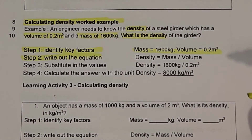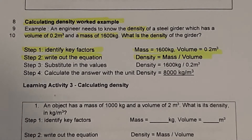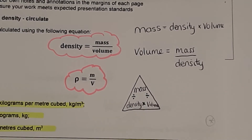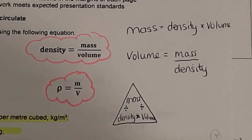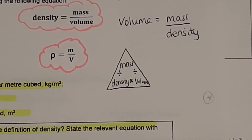Step one: identify your key factors — by writing them out or highlighting them. Step two: write out the equation in the form you're going to use it. It's not just enough to write density equals mass divided by volume; you need to write it in the form you'll use. If asked to calculate mass, write mass equals density multiplied by volume. You need to know the three rearrangements: density = m/V, mass = density × volume, and volume = mass ÷ density. The equation triangle can help — cover up what you're looking for.